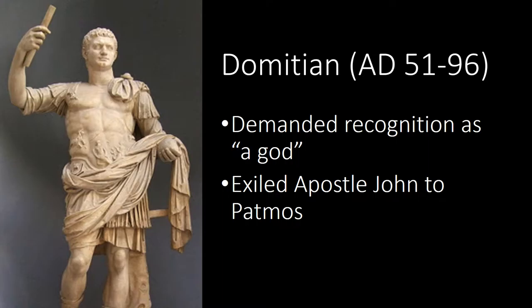Domitian, who ruled when the apostle John wrote the book of Revelation, was the first emperor who demanded recognition as God the Lord. He insisted people hail his greatness with terms such as Lord of the earth, invincible, glory, or holy — and he attempted to enforce all of that by force.